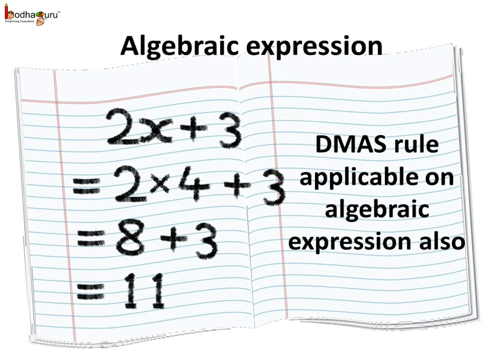So, we solve 2 multiplied by 4 is equal to 8. And here we get 8 plus 3. So, this expression gets solved as 8 plus 3 equal to 11. And we get the answer as 11.